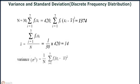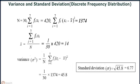Variance sigma square equals 1 by n, summation i equals 1 to 7 of fi times (xi minus x-bar) whole square, which equals 1 by 30 into 1,374, which equals 45.8. Standard deviation sigma equals under root of 45.8, which equals 6.77.